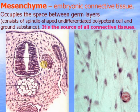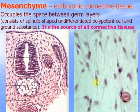Mesenchyme is embryonic connective tissue. It occupies the space between germ layers — for example, ectoderm, neural tube, notochord, and digestive tube. It consists of spindle-like cells with processes and ground substance. Mesenchyme is the source of all connective tissues in embryogenesis.